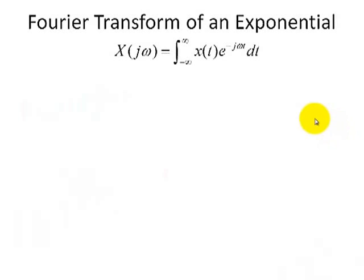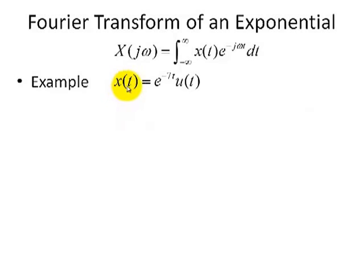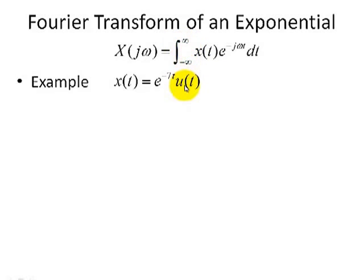Now we're going to perform the Fourier transform of an exponential by applying its definition. We're going to take this example where x of t is equal to e to the minus 7t, multiplied by a step function starting at t equals 0. The purpose of the step function is to change the integration limits of the Fourier transform definition, because the definition starts from minus infinity to infinity. But with the step function, we can now integrate from 0 to infinity.